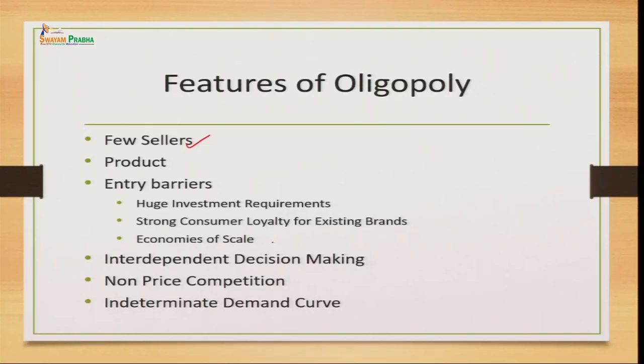Interdependence in decision making is a very important feature of the oligopoly market — firms basically have group behaviour. Unlike monopolists and monopolistic competitive market players who have independent decision making, oligopoly firms have very few players in the market. Any change in price or output will definitely affect competing firms. Therefore, decisions are usually made together.